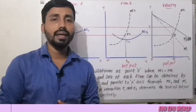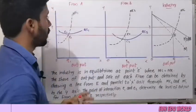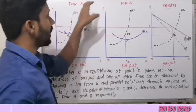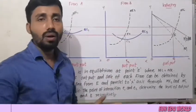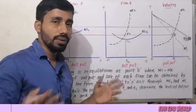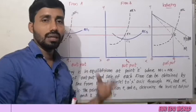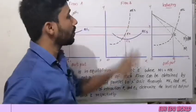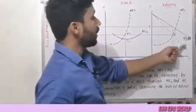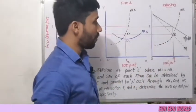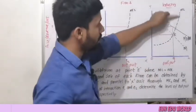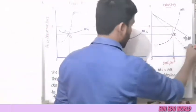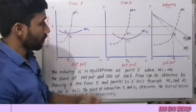In the case of collusion, there is a graphical representation and the equilibrium point is determined. There are two firms in the industry. This is the price-demand or AR curve — the average revenue curve. This is the MC curve and this is the marginal revenue curve.